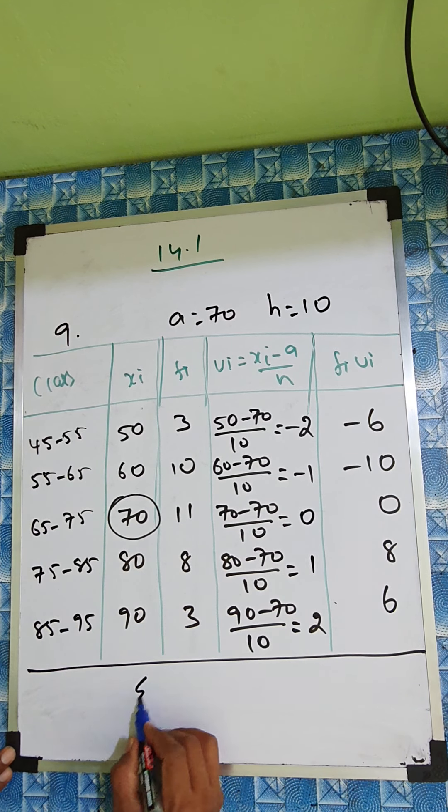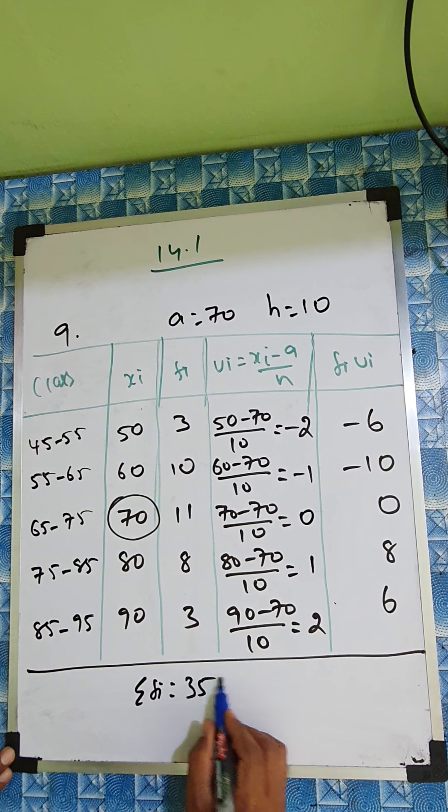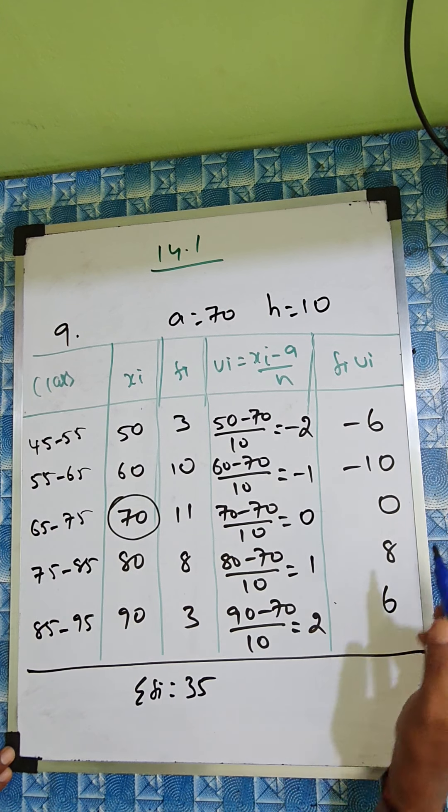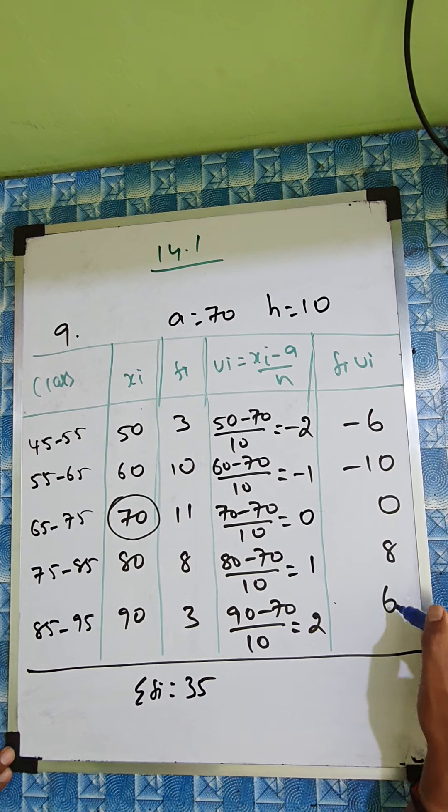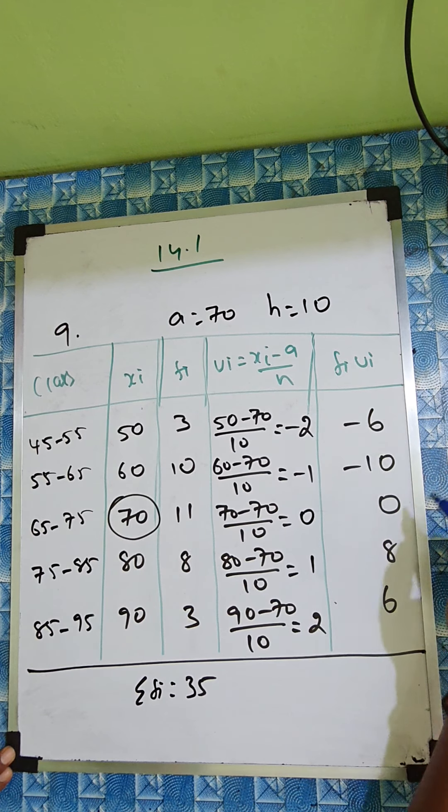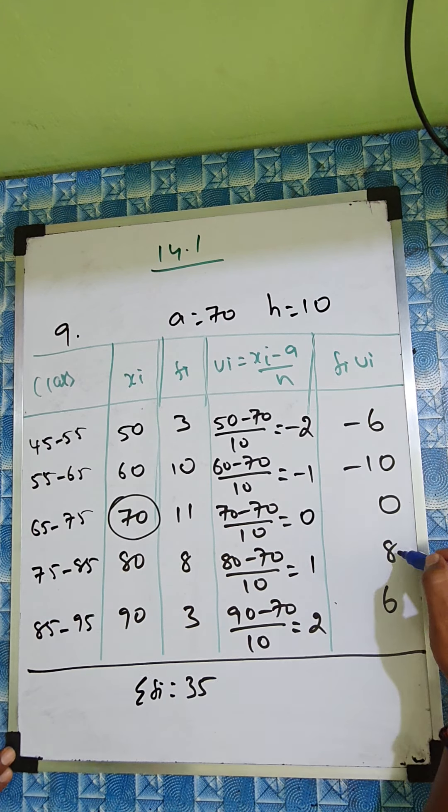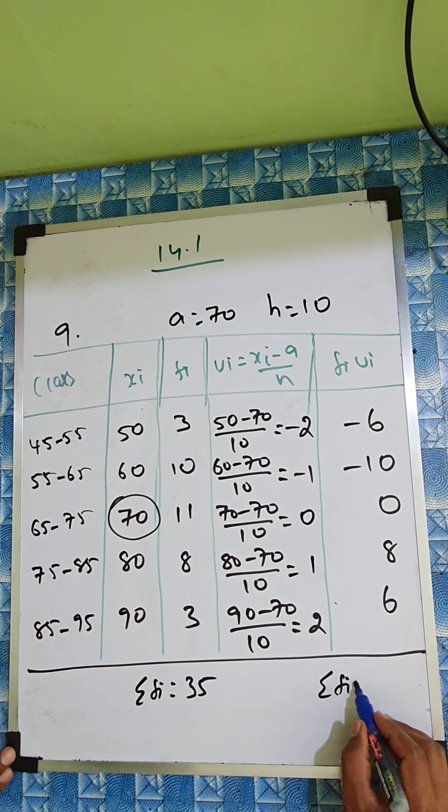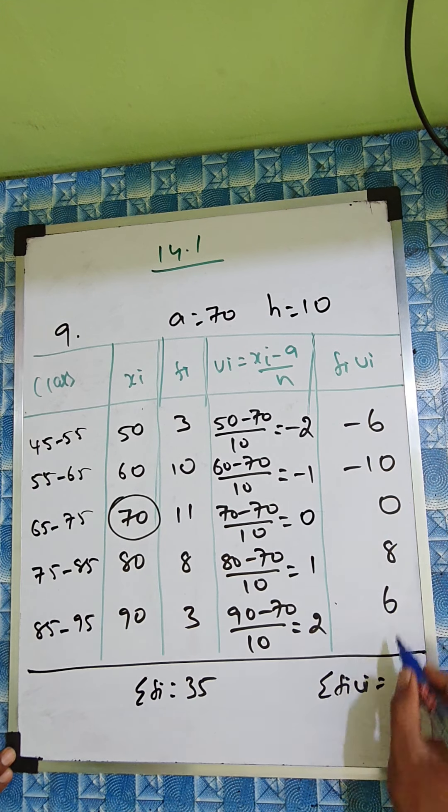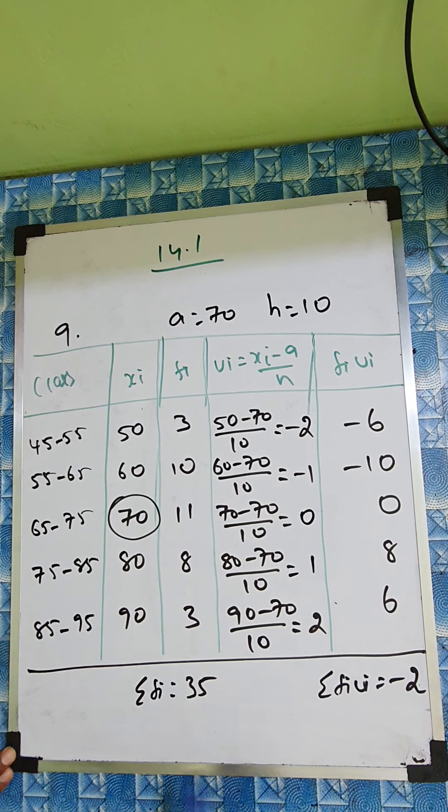This total, already in the question it's given, how many cities are there? 35 cities. So we can just write here 35. And here we can do easily, see: 6 minus 6 cancel, gone. So 8 minus 10 is minus 2. Sigma fi ui is minus 2.